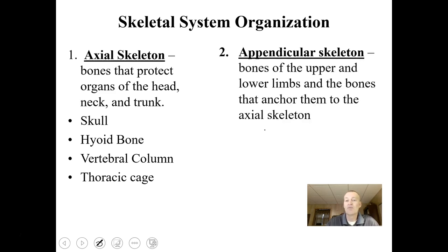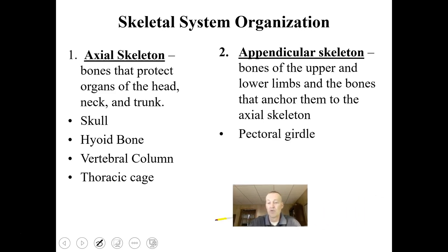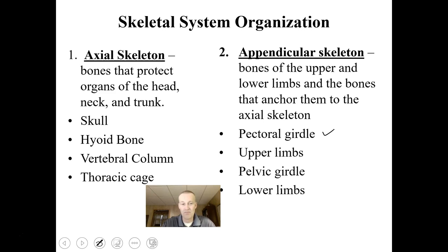Hanging off the body — pend means to hang off — is the appendicular skeleton. These are bones of the upper and lower limbs and bones that anchor them to the axial skeleton: the pectoral girdle, the upper limbs, the pelvic girdle, and lower limbs. The pectoral girdle includes things such as your clavicle, and the pelvic girdle includes your pelvic bones.